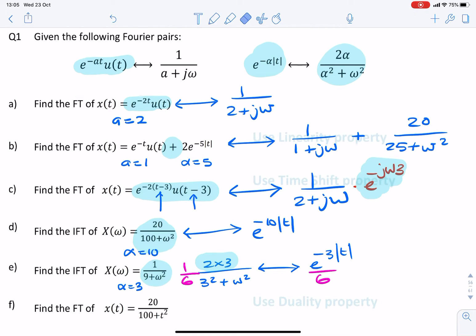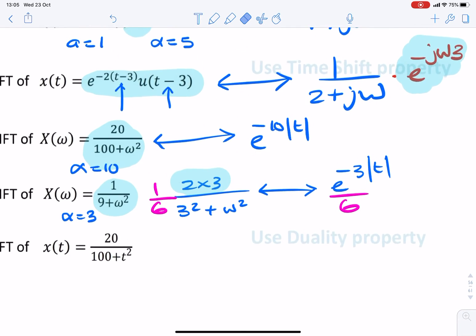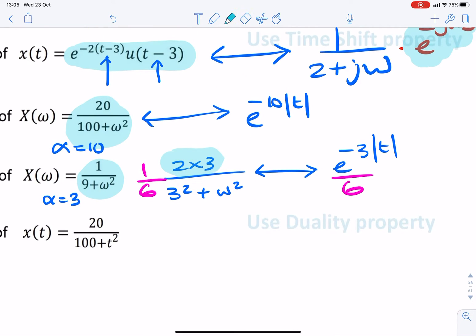Now, for the final question here, we need to use the duality property because that is in the time domain. So we know that e to the minus a absolute value of t corresponds to 2a over a squared plus omega squared.